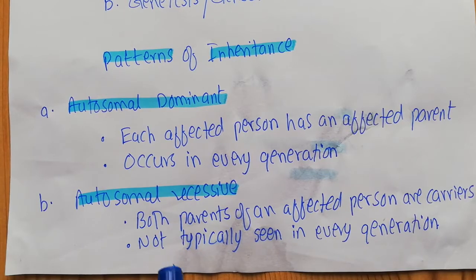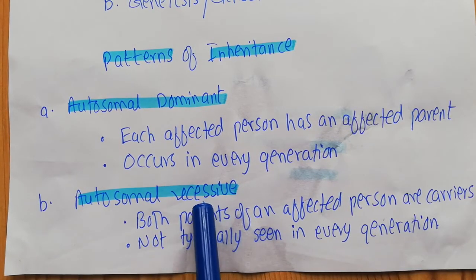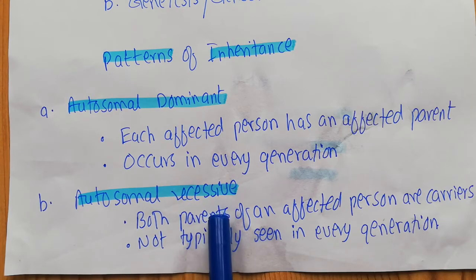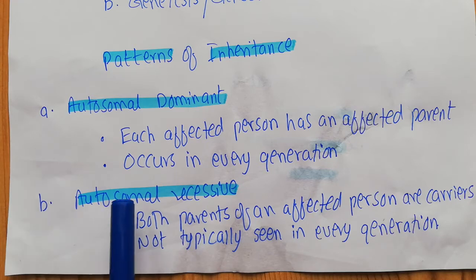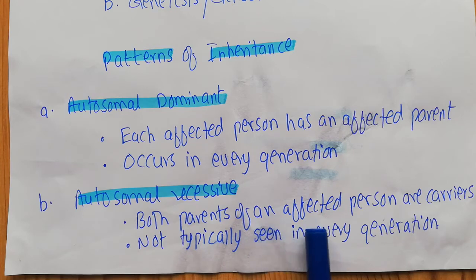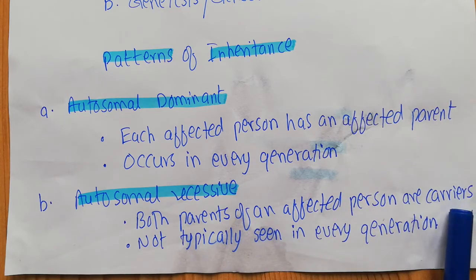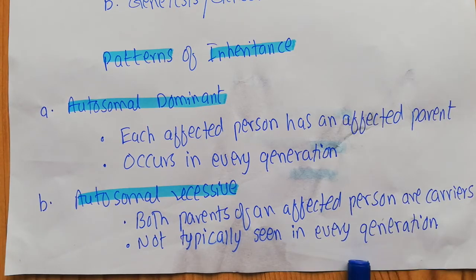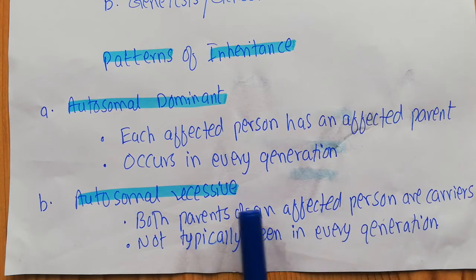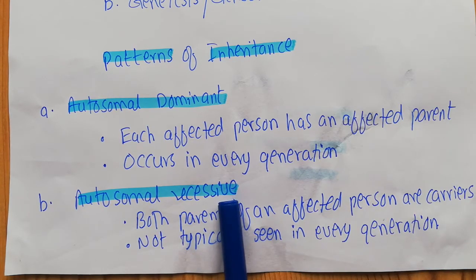The second mode is autosomal recessive. It is recessive because it can express itself only in the homozygous condition — two copies of the mutant allele are required for the disease to be expressed. It is autosomal because the gene is present on chromosomes one through 22. A key characteristic of autosomal recessive inheritance is that both parents of an affected person are carriers — one parent transfers one mutant allele and the other parent transfers another, and if the child receives both mutant alleles, the disease is expressed.